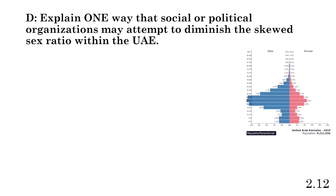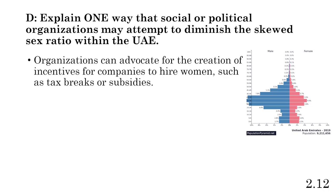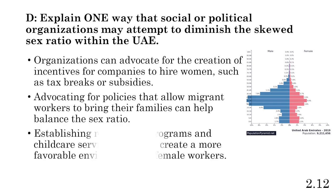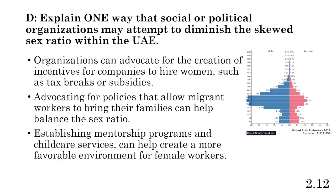Part D: one way organizations may attempt to diminish the skewed sex ratio. Organizations can advocate for incentives for companies to hire women — particularly international companies hiring women from other countries — such as tax breaks or subsidies if they meet a certain threshold of female employment. They can also advocate for policies that allow migrant workers to bring their families, which helps balance the sex ratio. Additionally, establishing mentorship programs and childcare services creates a more favorable environment for female workers and families.